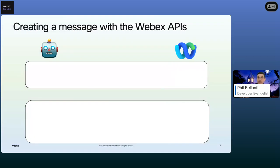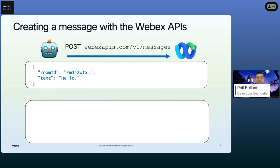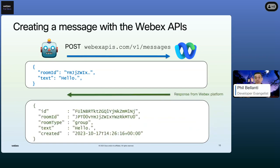Let's talk about creating a message with the WebEx APIs. Using the APIs to create a message is actually pretty easy. Here we're sending a JSON document via an HTTP POST to the messages API. That contains a room ID pertaining to the space that the message should go in, and the text of the message — that's all there is to it. Once you send that request, the API responds with the message ID, the room ID, the space type, whether it's a group or direct message, the text content, and the timestamp. If there was an error — like a missing room ID or unauthorized space — it would respond with an error code instead.